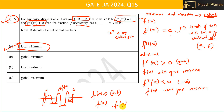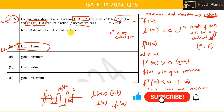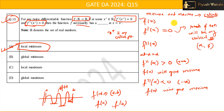Out of all the local minima and the endpoint values, whatever the minimum value is will be the global minimum. But in this question, we don't have a fixed interval, so we cannot say anything about the global minimum. That's why the correct option is option A — local minimum. I hope you understand this question. Thank you.